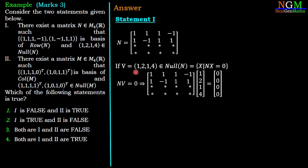So N multiplied with V = (1,2,1,4) gives us two equations: 1 + 2 + 1 - 4 = 0, and the second equation: 1 - 2 + 1 + 4 = 0. The first equation gives 0 = 0, but the second equation gives 4 = 0, which is not possible.